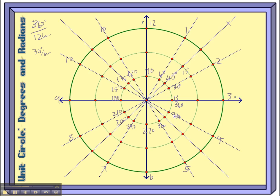In between 300 and the next one should be 315. So that completes all of the degree measurements on the unit circle.